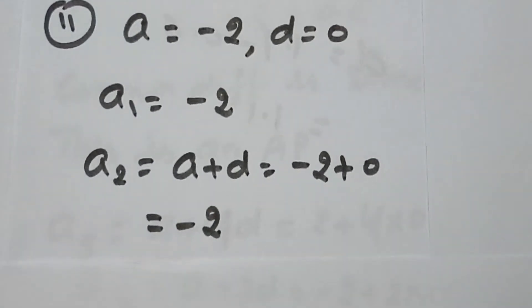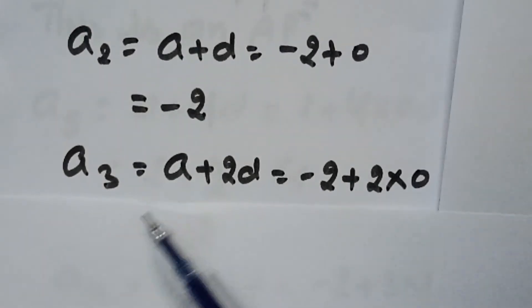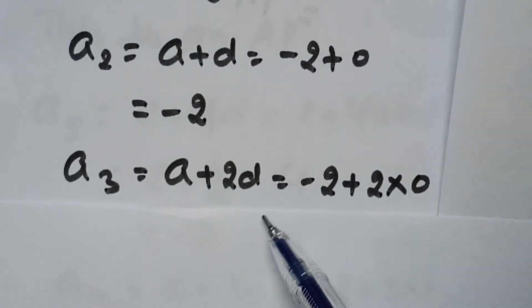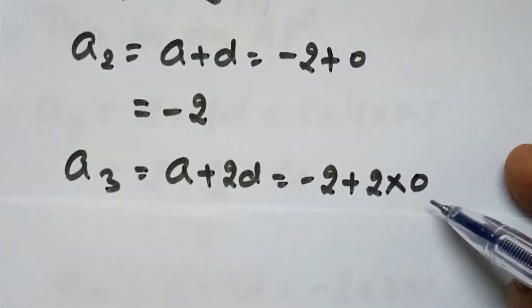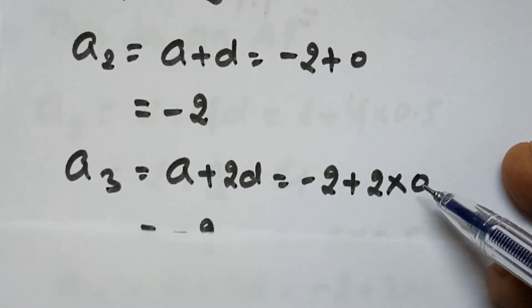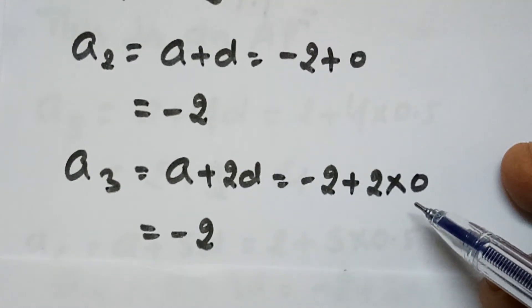To find the third term, the third term is A plus 2D. Here, A is minus 2 plus 2 times 0. 2 times 0 is 0, so the third term is again minus 2.